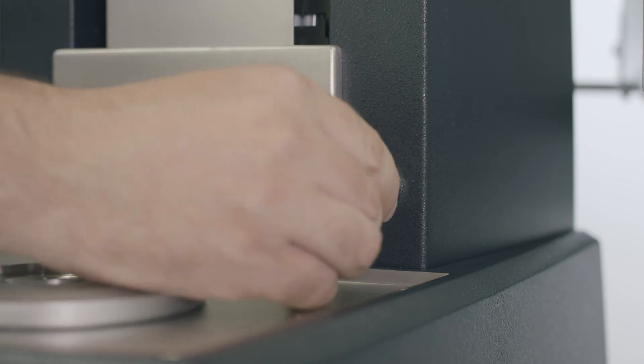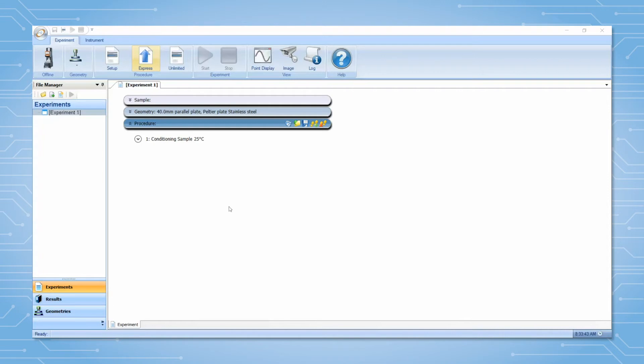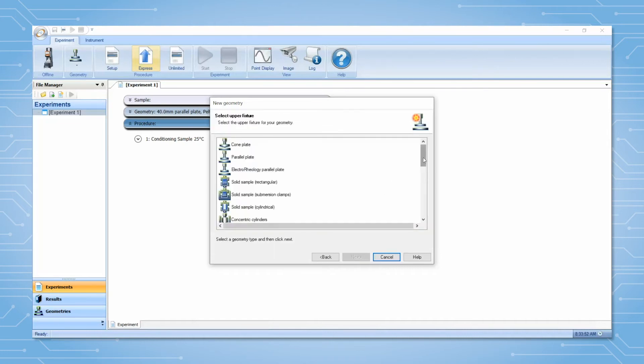Install the smart swap plug. If the geometry is not already set up in TRIOS, select Add New Geometry, Next, Extensional Fixture.